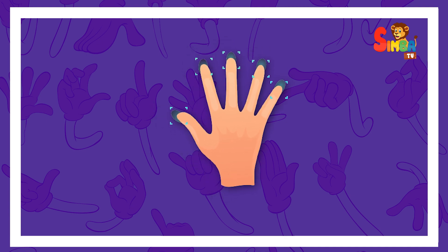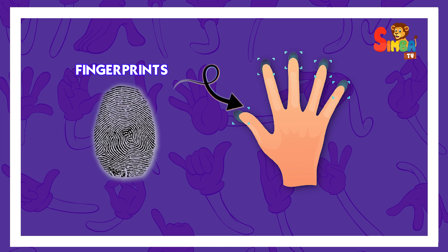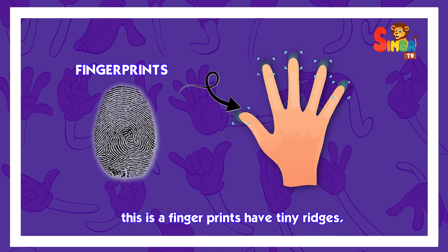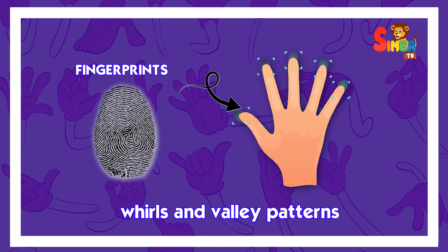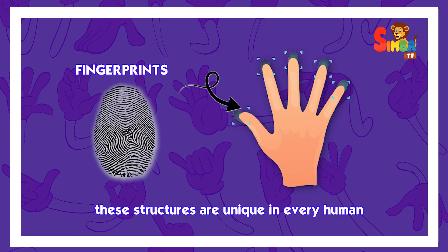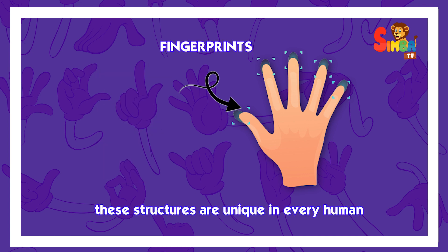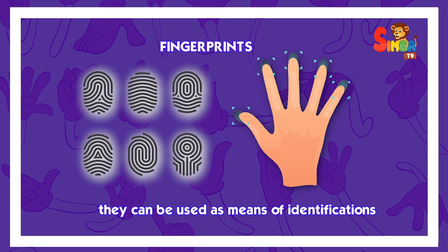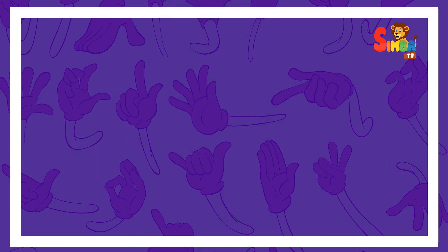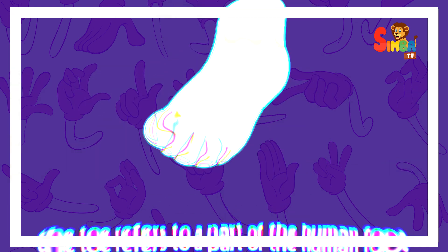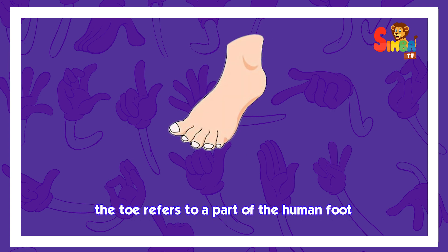There are fingerprints on the tip of each finger. Fingerprints have tiny ridges, whorls, and valley patterns. These structures are unique in every human and can be used as a means of identification.